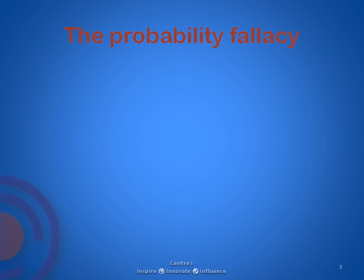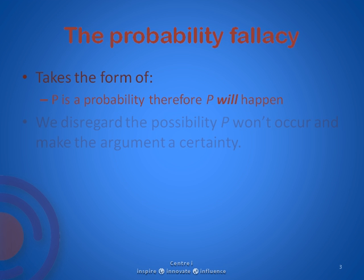So what's happening here is that I'm taking a probability of some action happening and turning it into a certainty, as you heard in each of the preceding examples. A probability fallacy takes the form of: P is a probability of something happening, and therefore there's the assumption that P will happen with certainty. What happens with people is that they disregard the possibility that P won't occur, and they make the argument a certainty.